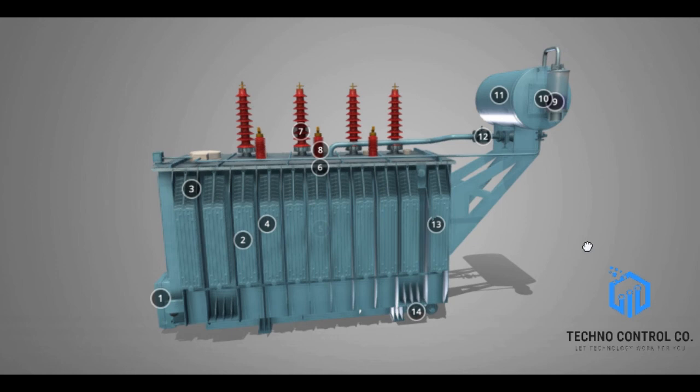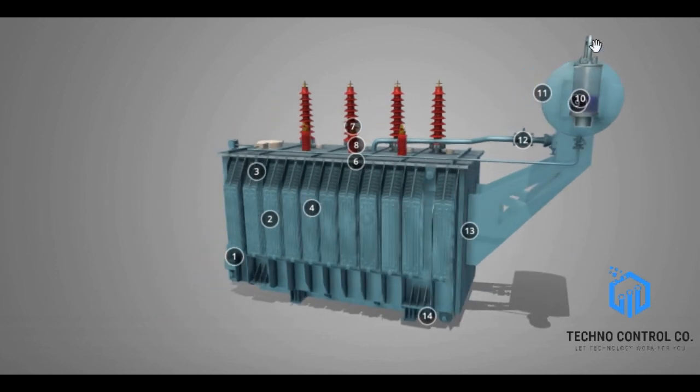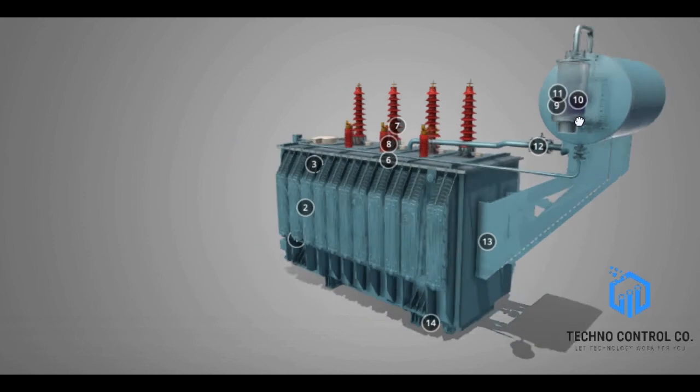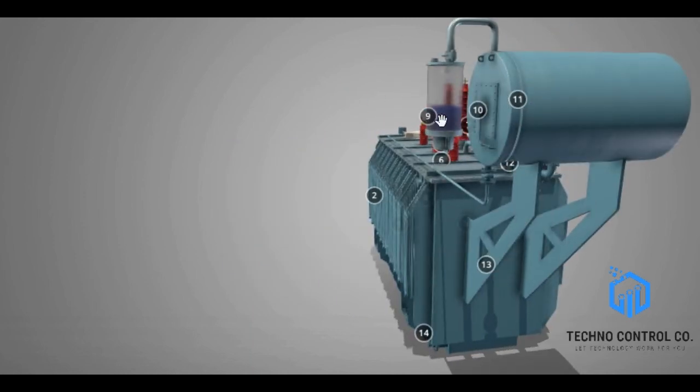Okay, let's talk about the components. This component right beside the conservative tank, the one right here, is called the silica gel breather. So what is it? Well, as you know, the lungs perform the filtration of air in the human body. Similarly, the silica gel breather allows the transformer to breathe in and breathe out.